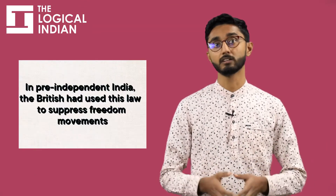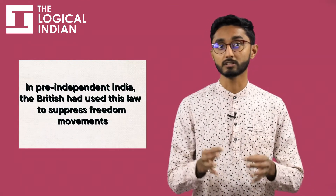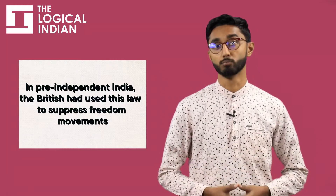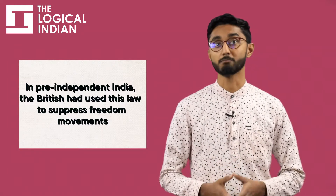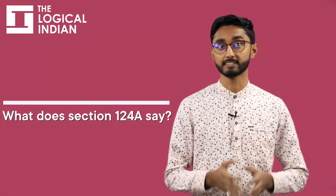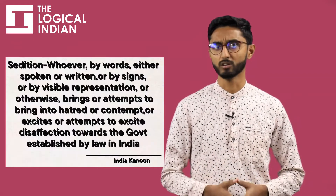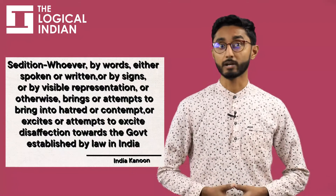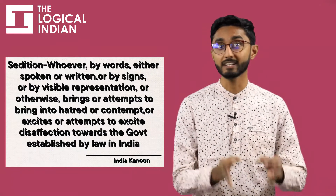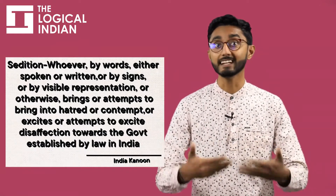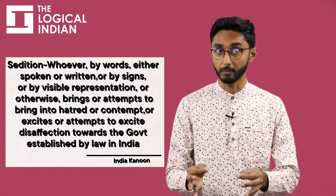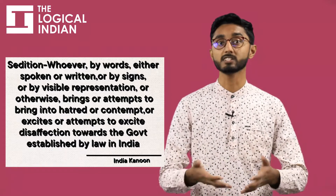In pre-independent India, the British used this law to suppress freedom movements, and leaders like Mahatma Gandhi and Bal Gangadhar Tilak had to even go to jail under this law. Section 124A deals with words, signals, or visual representations that bring or attempt to bring into hatred or contempt, or excite disaffection against the government established by law in India.